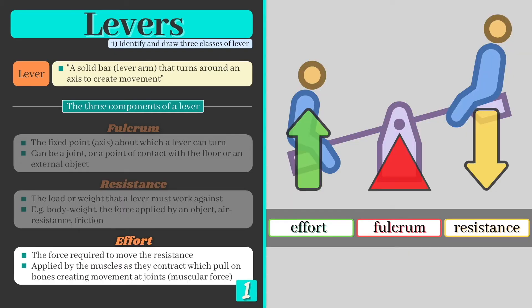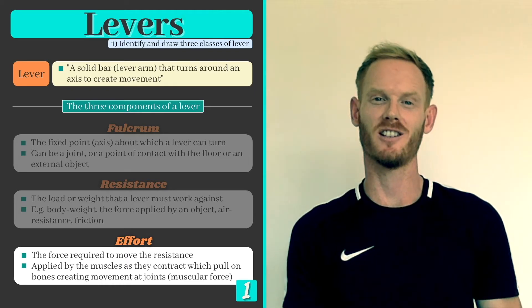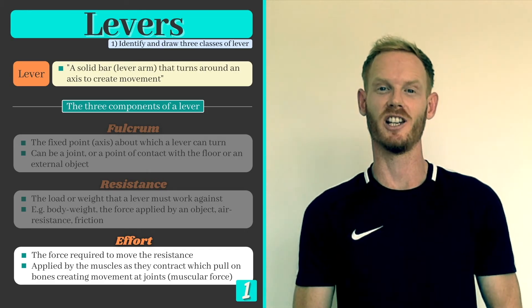The final component is effort, which can be defined as the force required to move the resistance. Effort is applied by the muscles as they contract, which pull on the bones producing movement at joints. The way in which these components are arranged determines the characteristics of a given lever, and there are three classes of lever that you need to know.